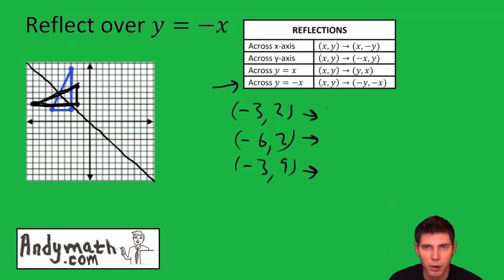And it says do negative y, then negative x. So we switch the two values and we make them both the opposite of what they were. So this says for the first spot put the negative y.